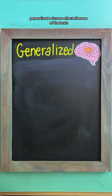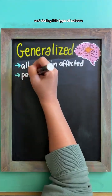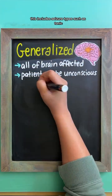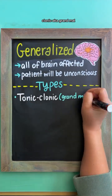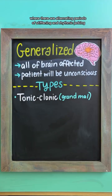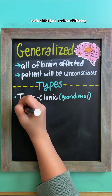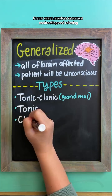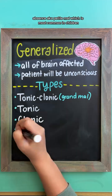Generalized seizures affect all areas of the brain, and during this type of seizure, the patient will be unconscious. This includes seizure types such as tonic-clonic, aka grand mal, where there are alternating periods of stiffening and rhythmic jerking; tonic, which just involves stiffening; and clonic, which involves recurrent contracting and relaxing.